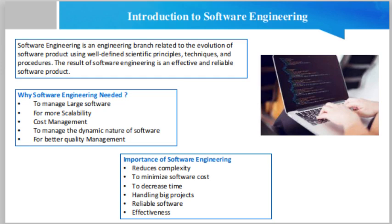Huge programming: it is simpler to manufacture a wall than a house or building. Similarly, as the size of programming becomes extensive, engineering has to step in to give it a scientific process. Adaptability: if the software procedure were not based on scientific and engineering ideas, it would be simpler to recreate new software than to scale an existing one.